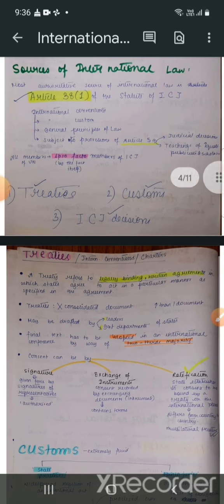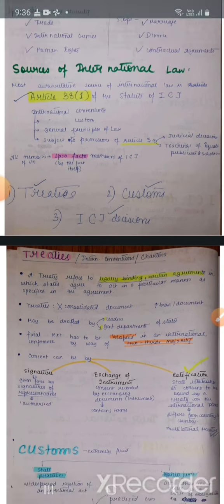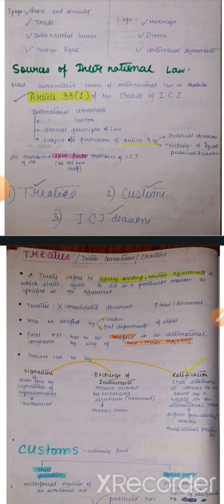New chapter: Sources of International Law — kahaan se humein itna kuch pata chalta hai. Teen main sources hain. Pehle toh Article 38 sub-clause 1 of the Statute of ICJ — ICJ matlab International Court of Justice.